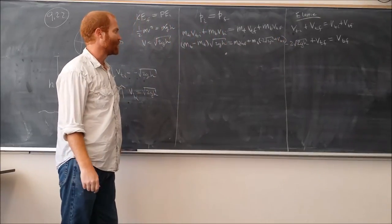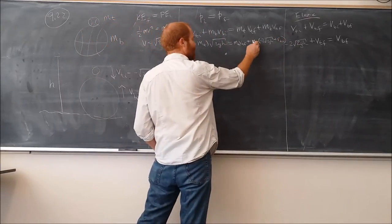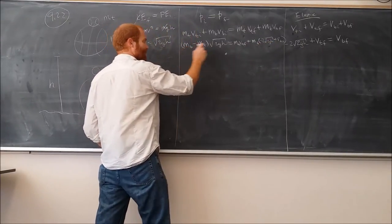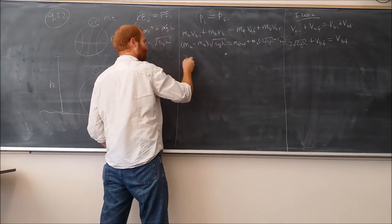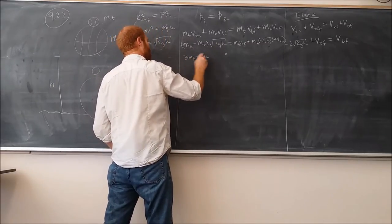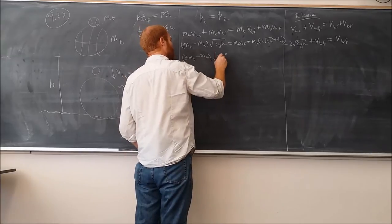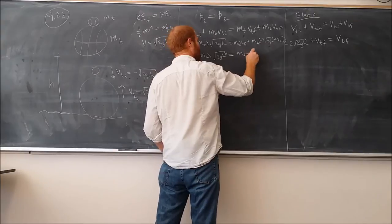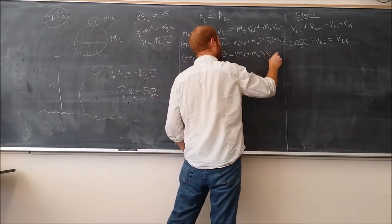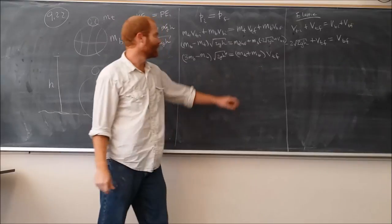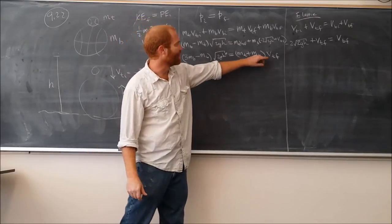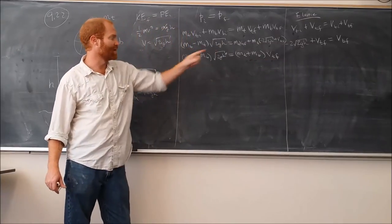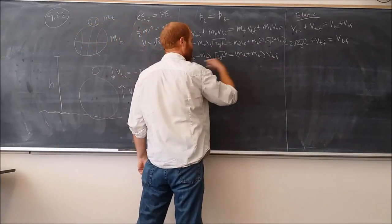So we get that right there. Now we can group terms. We can have MB times negative 2 root 2gh. We can add to this side here, making this MB plus 2. So we're going to get 3MB. I've also skipped a step here where I group together—there's an MB VTF and an MT VTF. So we can factor out the VTF to get that. Now we can just solve for VTF by dividing by this.